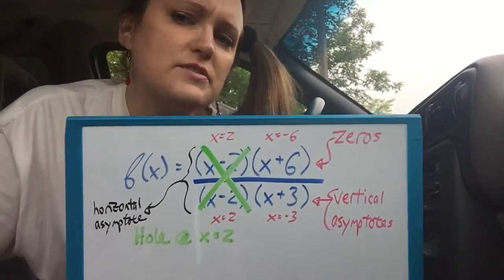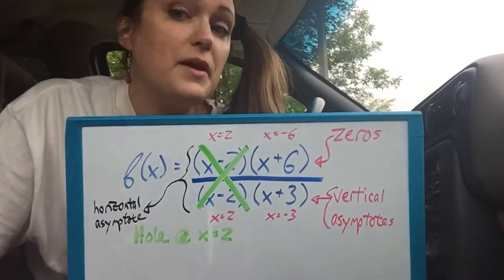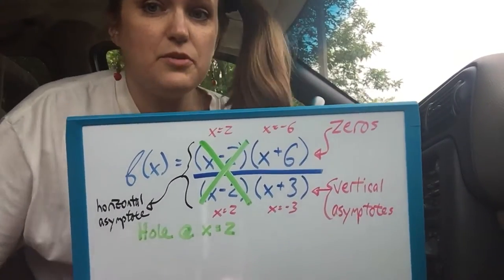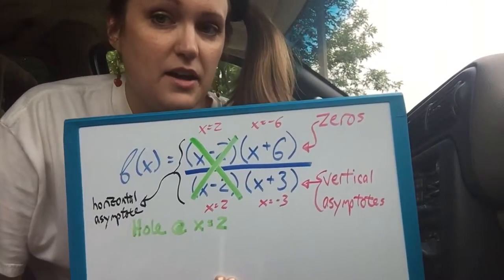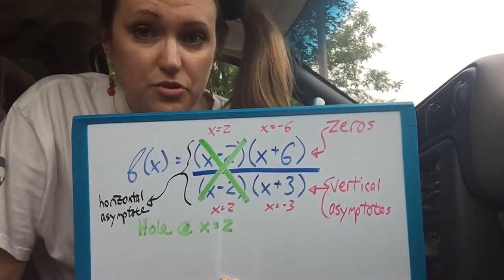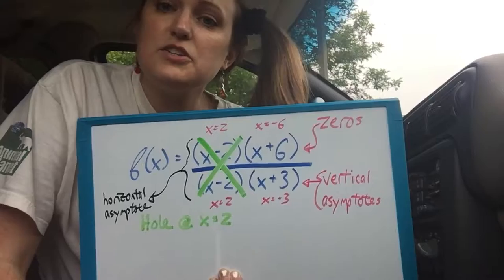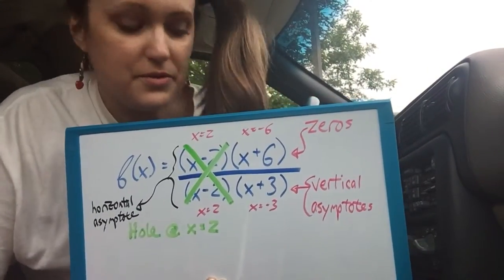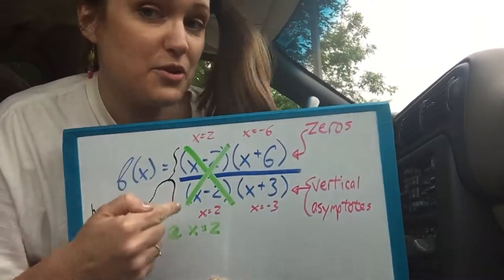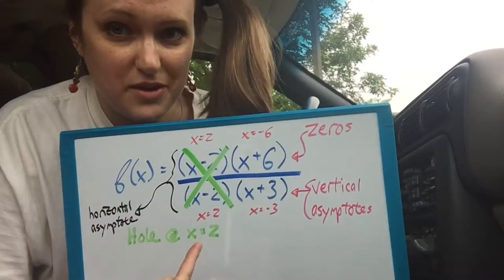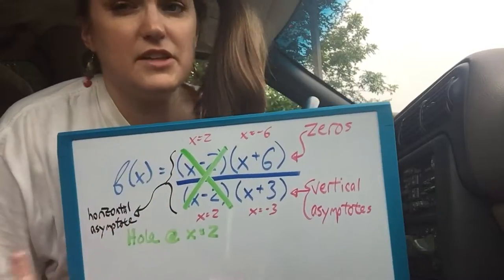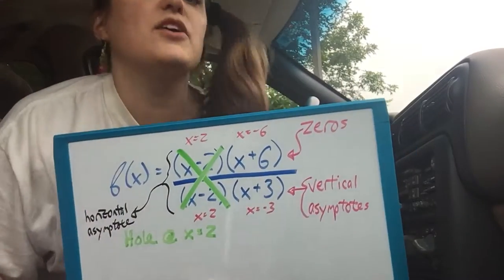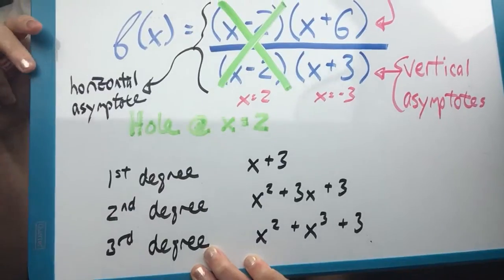And where do we get our horizontal asymptote? From the top or the bottom? Actually, we get our horizontal asymptote from comparing the top and the bottom. And what we're comparing is the degrees. So is it a second degree, third degree, first degree, nothing degree? In my case, they are equal. They're both actually second degree each because even though I canceled out the factors, they're still in the original x squared something over x squared something.